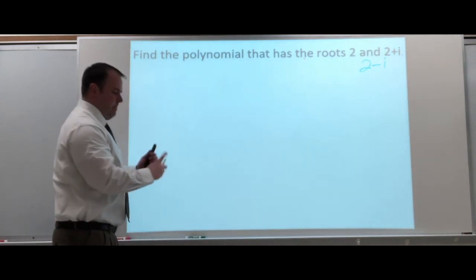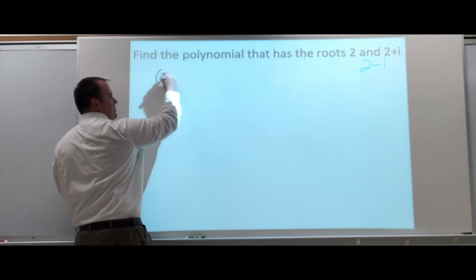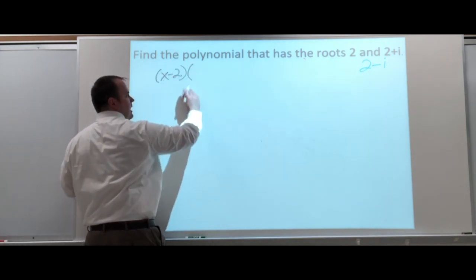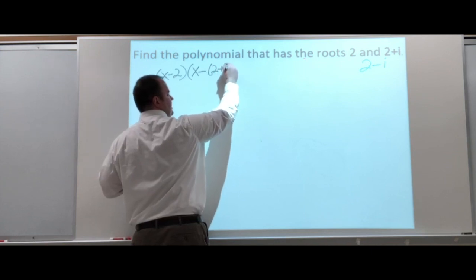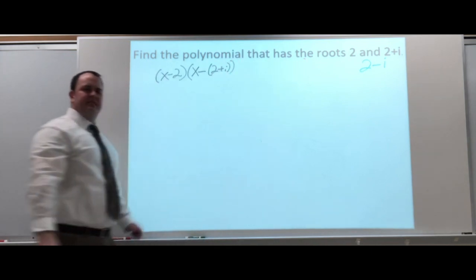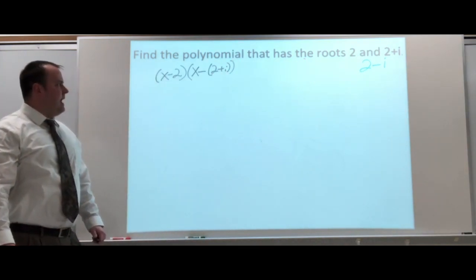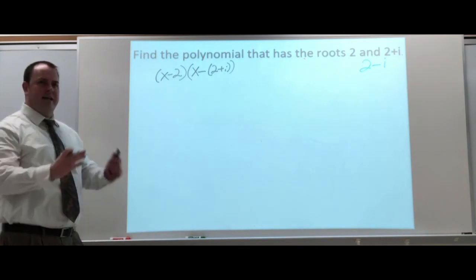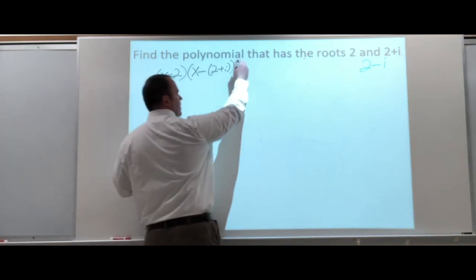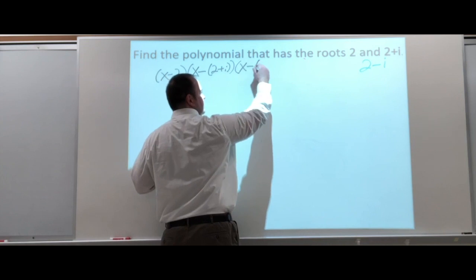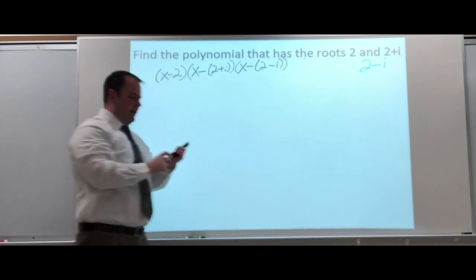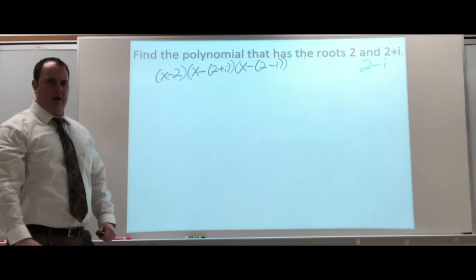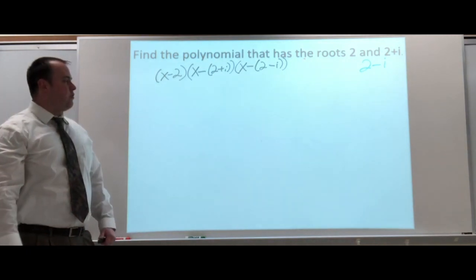Now, watch how I set these ones up. We're going to have our X minus 2. X minus 2 plus i. That 2 plus i has to stay together. So, when I'm minusing that X, you have to make sure that 2 plus i is in parentheses together. X minus 2 minus i. So, that 2 minus i has to stay together. You do have to be careful about how you're writing this out.